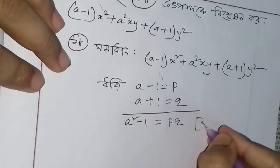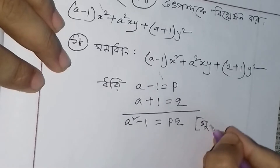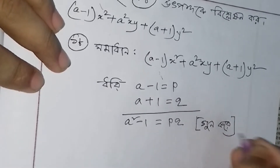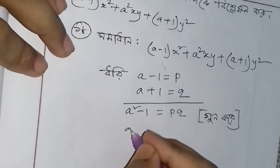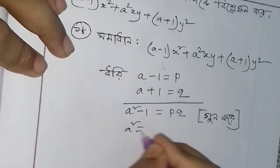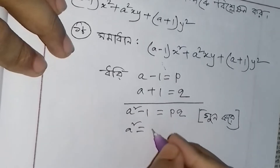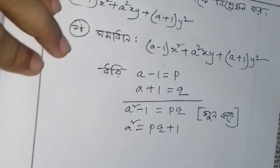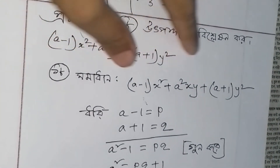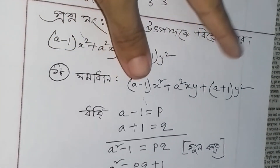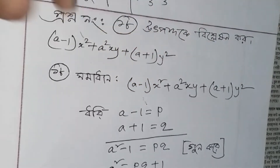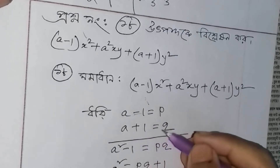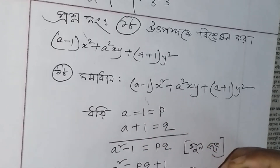Ekhanaet partial-e khe dhe bho, gung kori. Ehi a square equal pq plus 1. Ekhana aamad ehi jay rashi taha shi lho — ehi p, ehi a minus 1-er maan p, a plus 1-er maan q, ebong a square-er maan pq plus 1 bhoi.